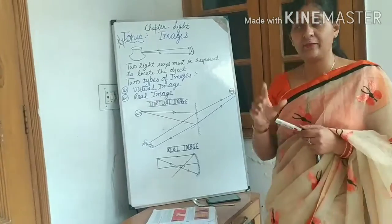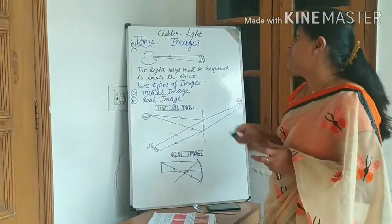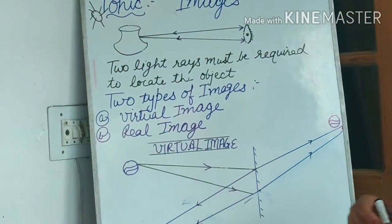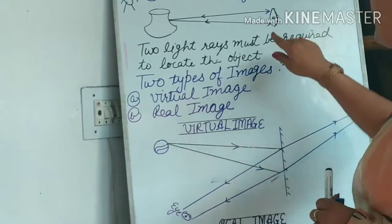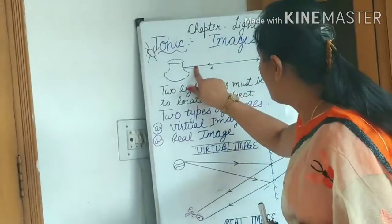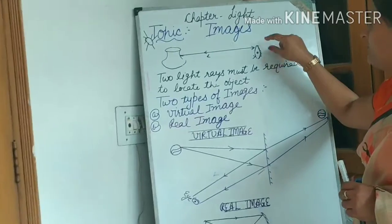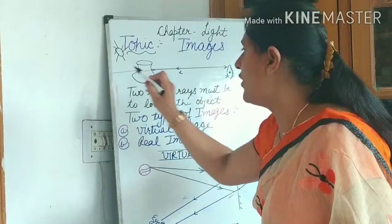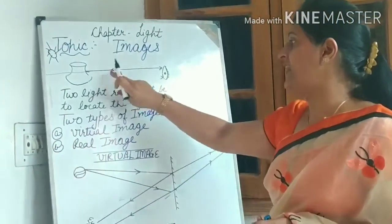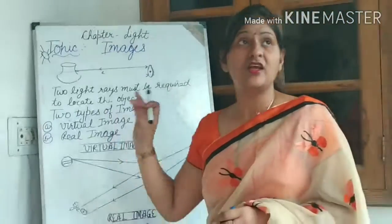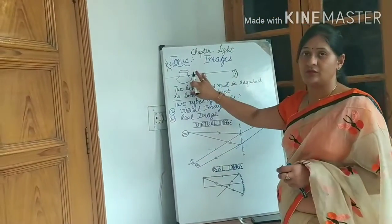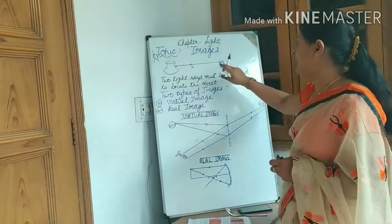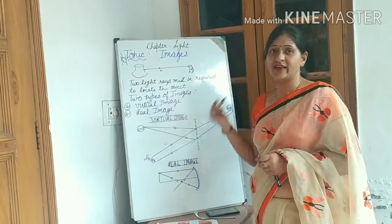Keep one thing in mind: for forming an image, we need at least two light rays. Because if we have only one ray, our eye traces that single ray back and there will be no point of intersection — the eye cannot locate the object. With light reflecting from all points falling on our eyes, we can see the object.